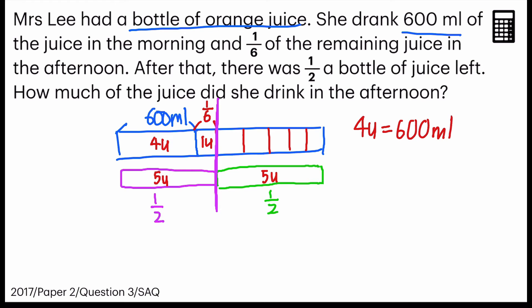And what does the question want us to find out? How much of the juice did she drink in the afternoon? In the afternoon, which is one unit. So I just have to find out what's one unit. To do so, I would take 600 ml divided by four, and I'll get 150 ml. And the answer is 150 ml.